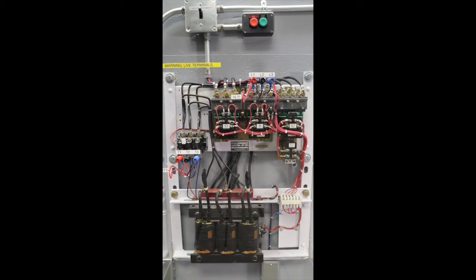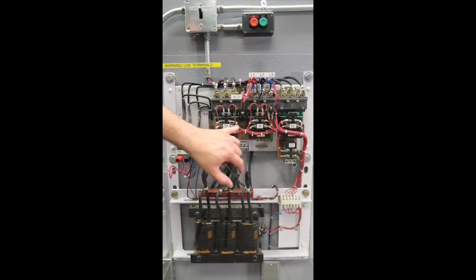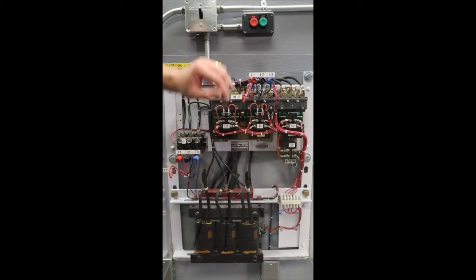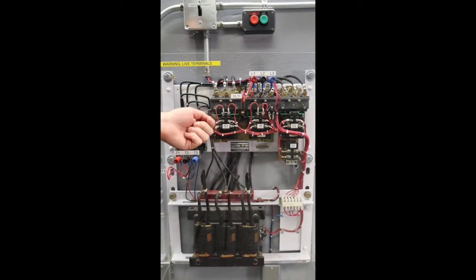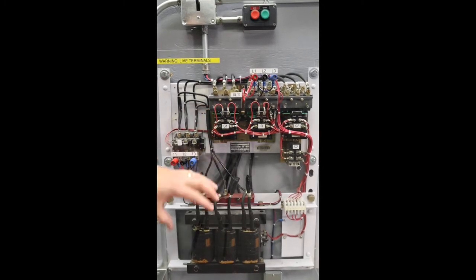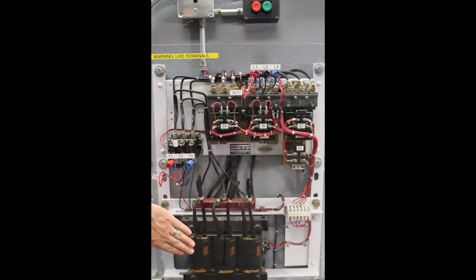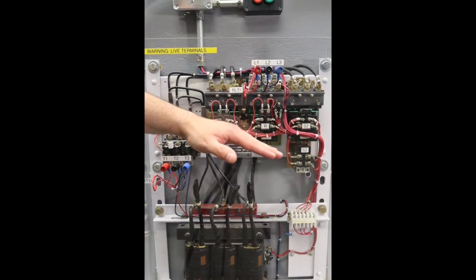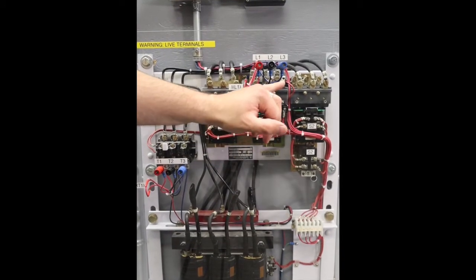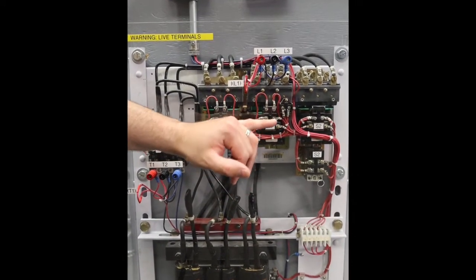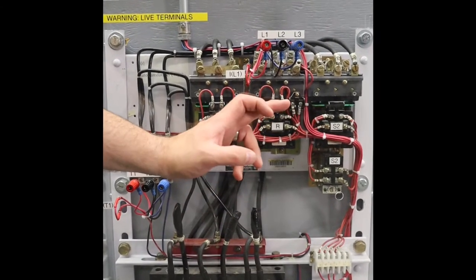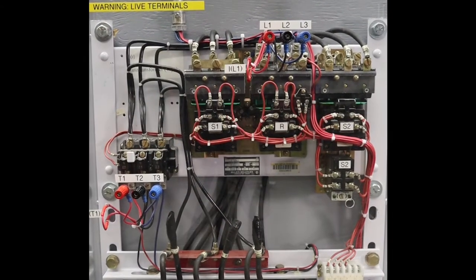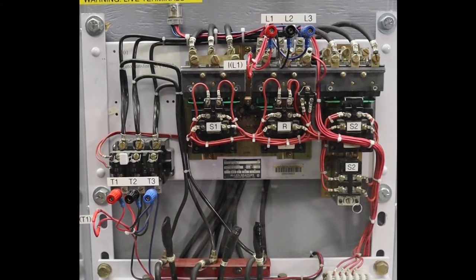With the auto transformer motor starter, what we're going to see is right when I hit that start button, my S1 and S2 coil will energize. Now what will happen in the transitioning period, S1 drops open, which opens my Y point for my auto transformer, then it's still energized through S2, only now using the auto transformer as almost an inline resistor, and you'll see it switch into R, and then S2 will open. So when it's in run, it'll be at full voltage.